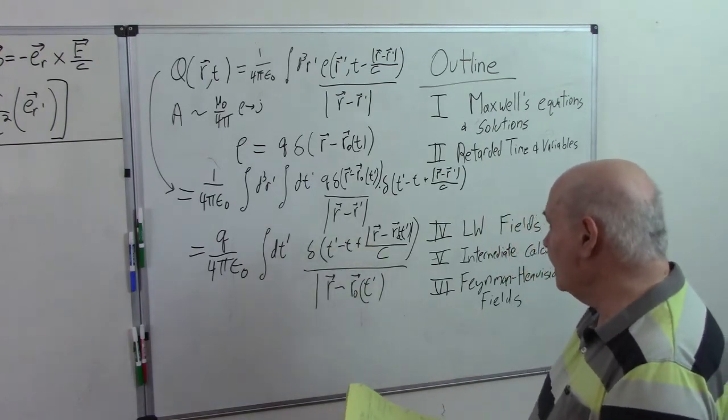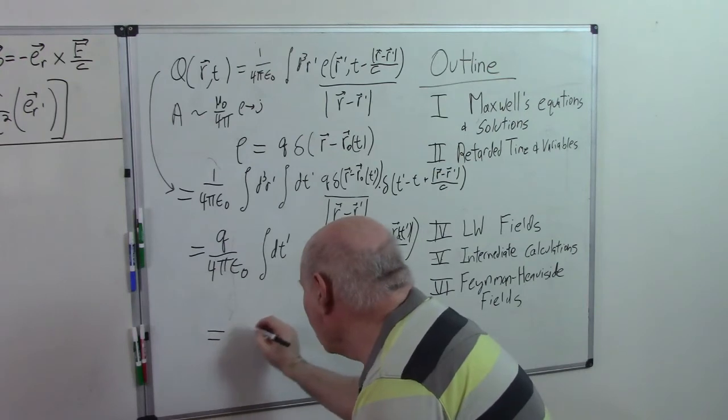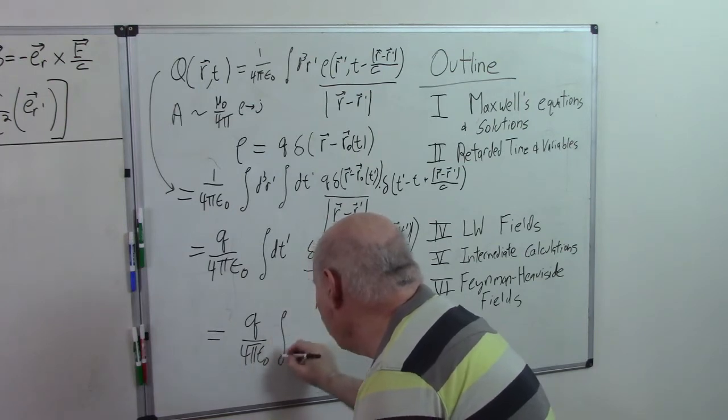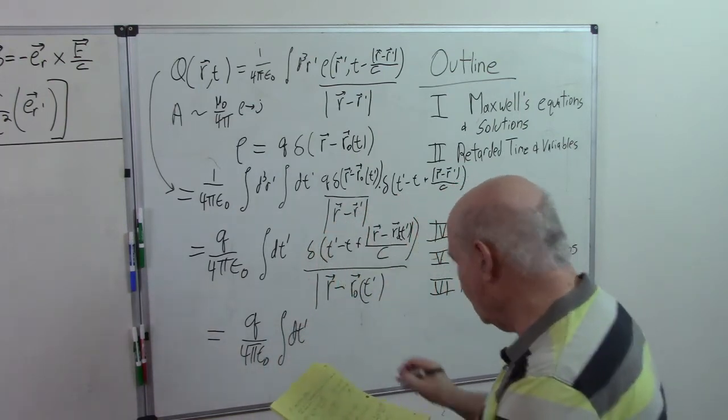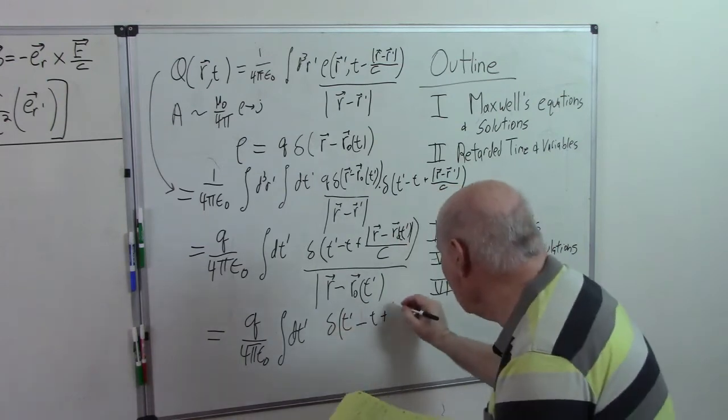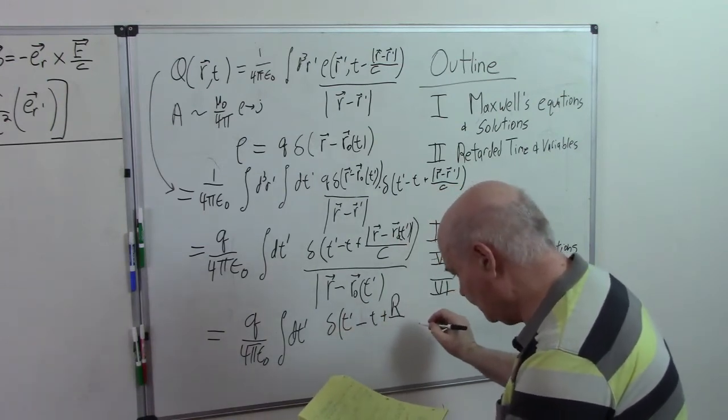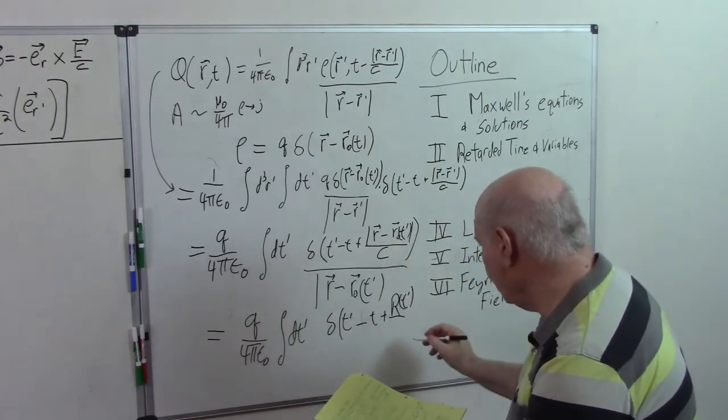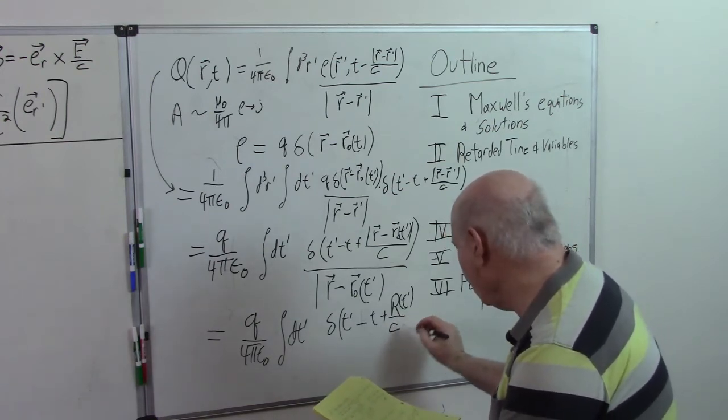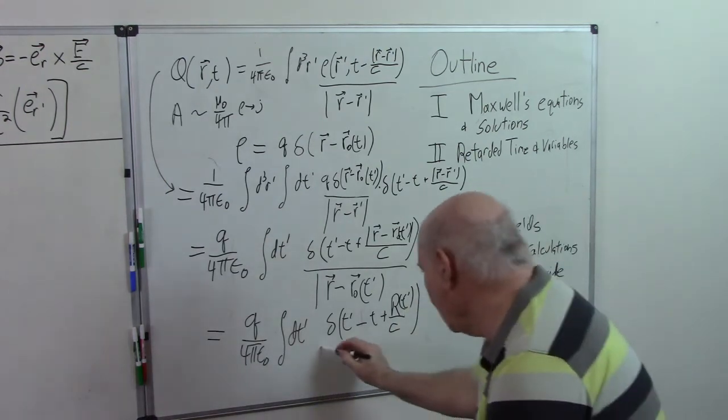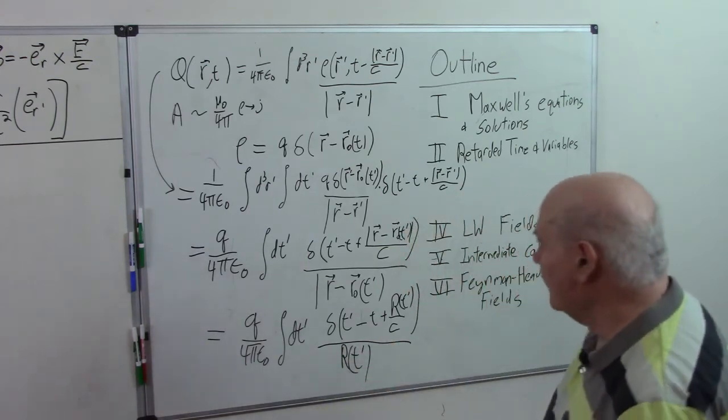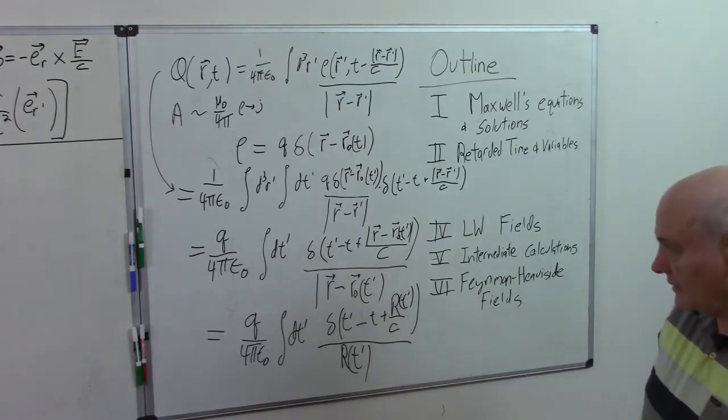Okay. And I'm using some of the notation that we used earlier. I'll just change the names of my variables a little bit. r is like r minus r_0. Got t' minus t plus r/c divided by r of t'. Okay, so we've reduced our problem to one integral in the delta function. And this is not difficult at all.